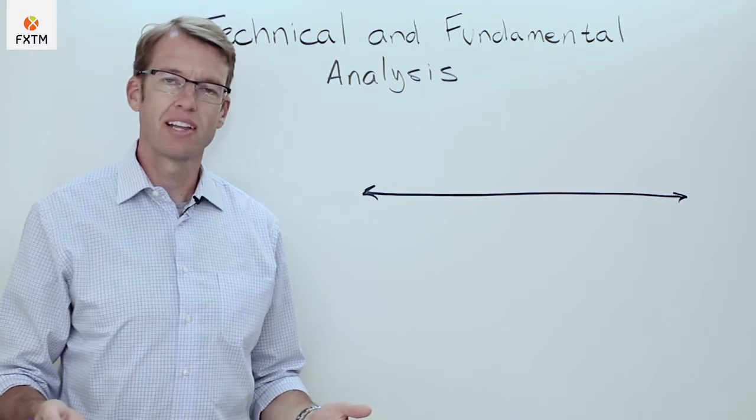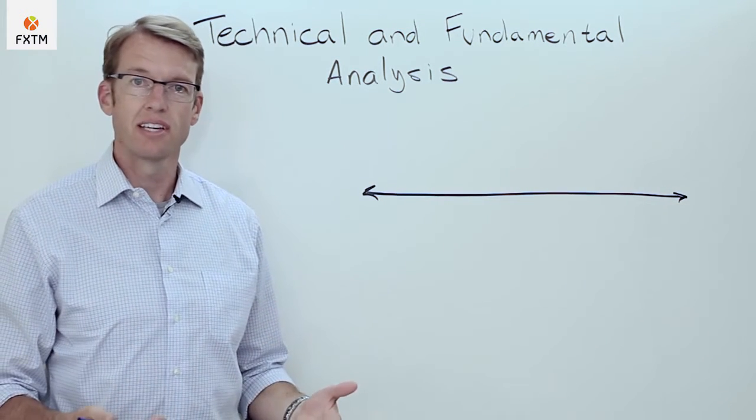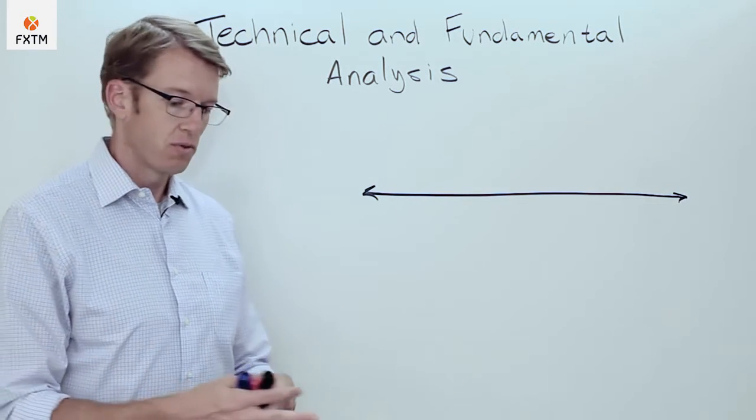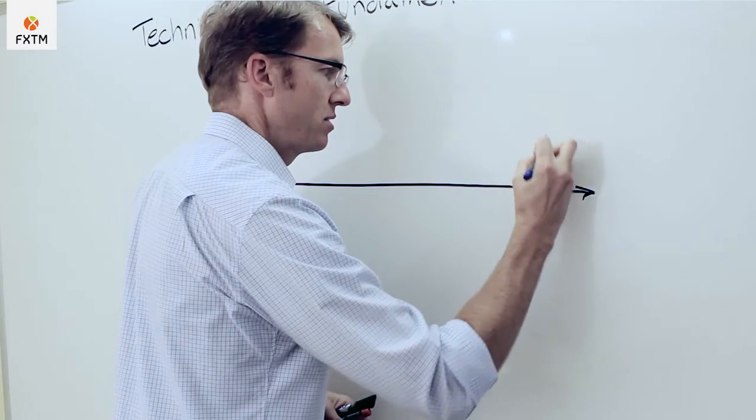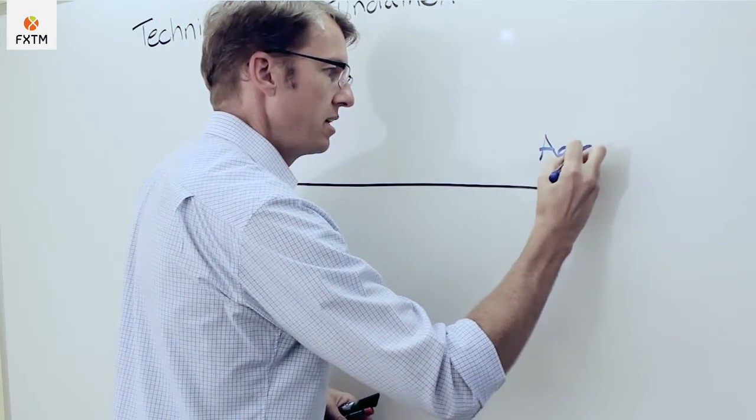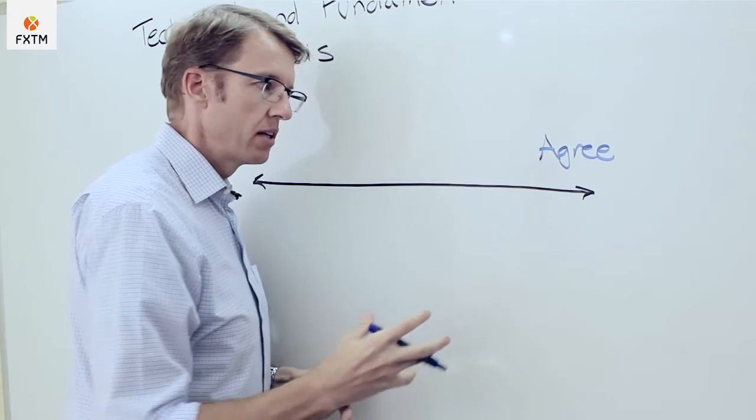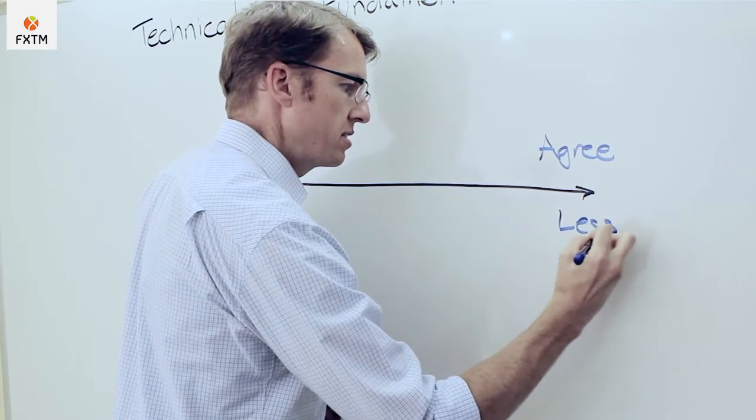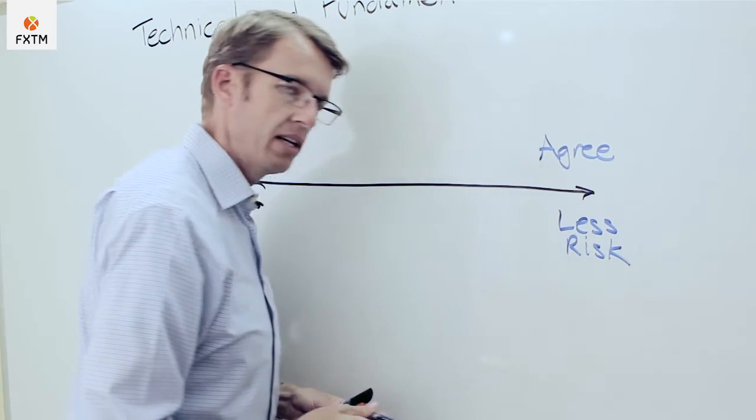When we're doing fundamental analysis like this, what we're really trying to do is to understand the inherent risk in the current trend. So for example, one way for us to think about this is that if the fundamentals agree with the underlying trend of the currency pair that we're trading, then we would expect that there is less risk in a trade associated with that trend.